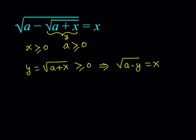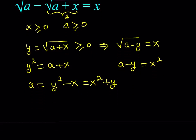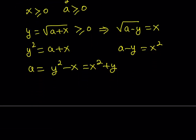I have two identities. If I go ahead and square both sides, I get y squared is equal to a plus x, and here I get a minus y is equal to x squared. So from these two equations, if you isolate a: from the first one you will get y squared minus x, and from the second one you would get x squared plus y. Since a equals a, we can say that these two are equal quantities.